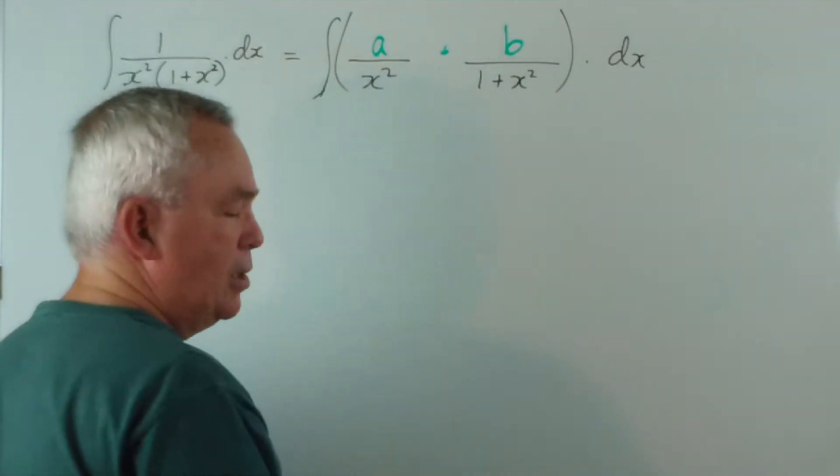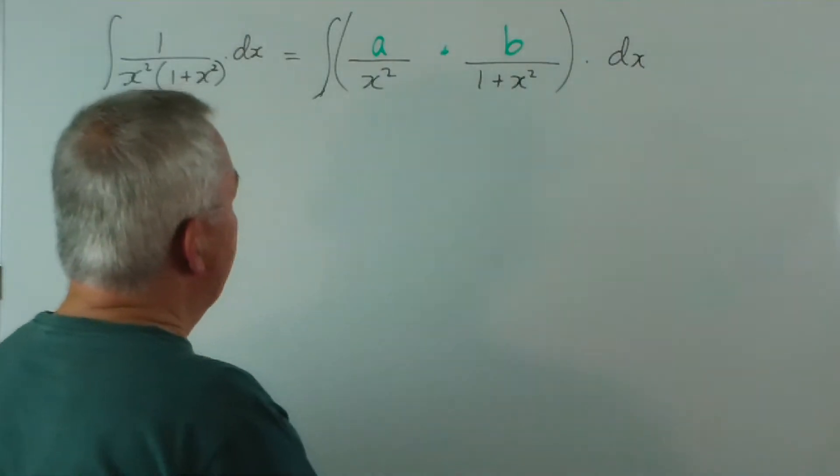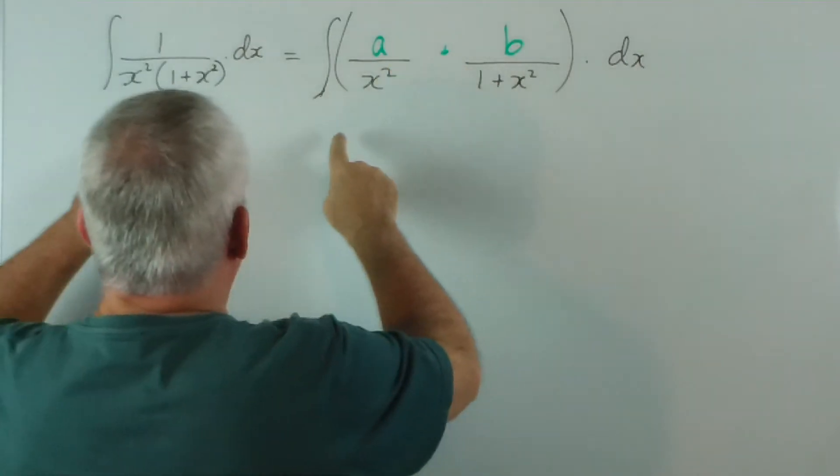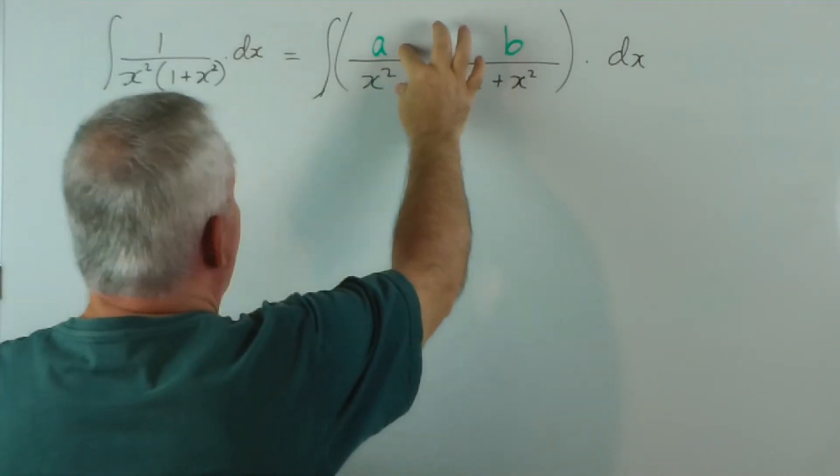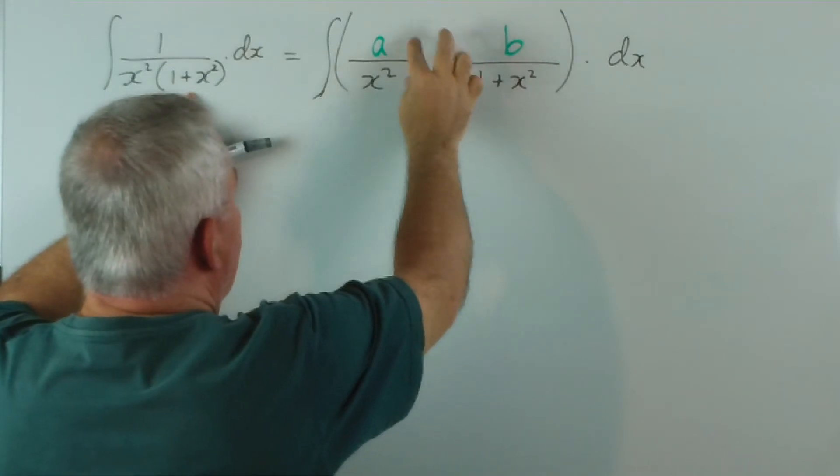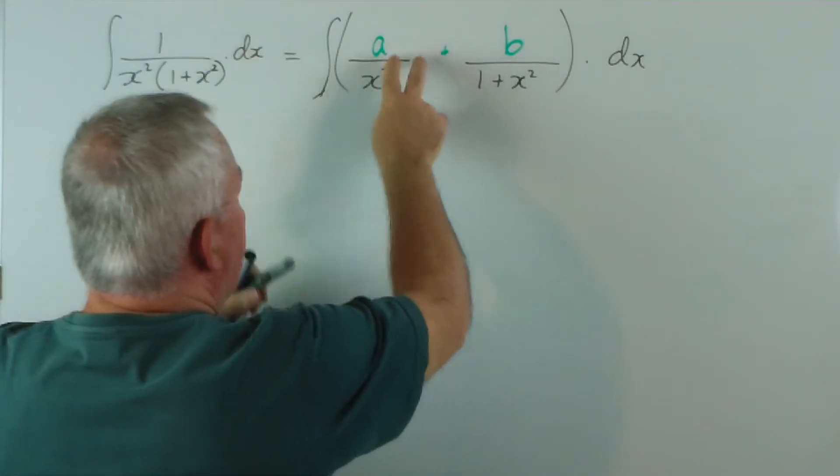I'll call it a plus b. And let's see what we get. In order to have this denominator, the top and bottom here would be multiplied by 1 plus x squared. So we get a 1 plus x squared here and a 1 plus x squared there.